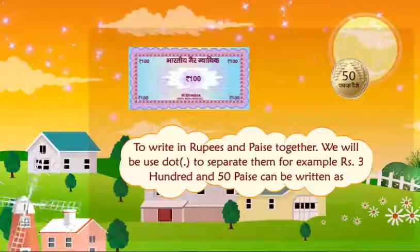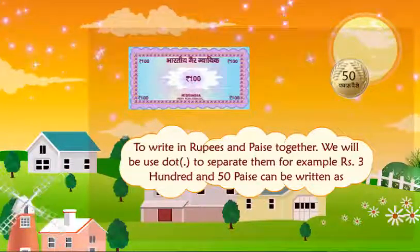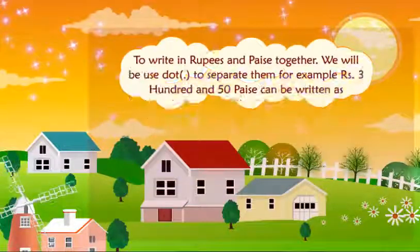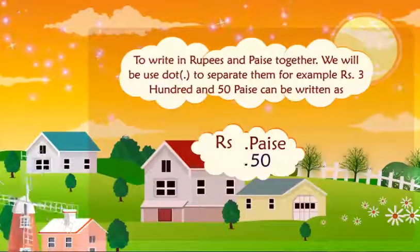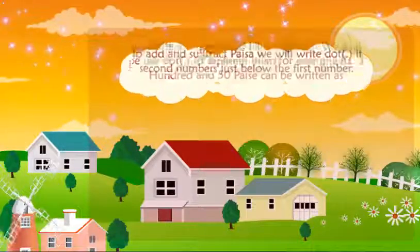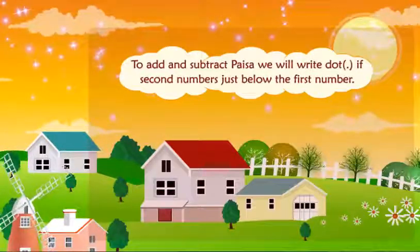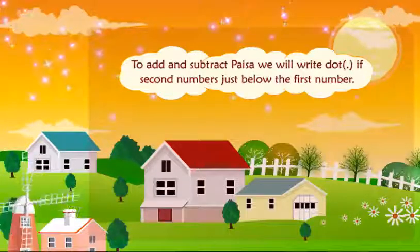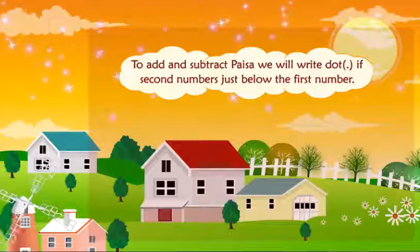For example, rupees 350 and 50 paise can be written as 300 rupees 50 paise. To add or subtract rupees and paise, we will write the dot of the second number just below the first number.